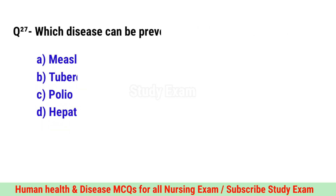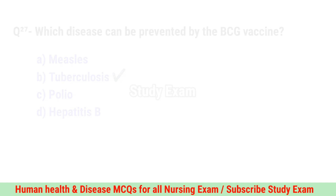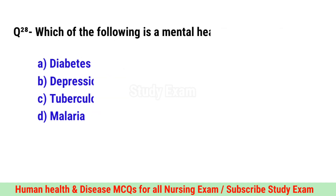Question No. 27. Which disease can be prevented by the BCG vaccine? Right option is B. Tuberculosis.